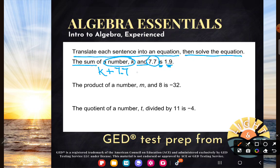So the sum of a number K and 7.7 is, it equals 1.9. That was the first thing we were asked to do. Write an equation. Next thing is to solve that equation. Let me get myself some room.